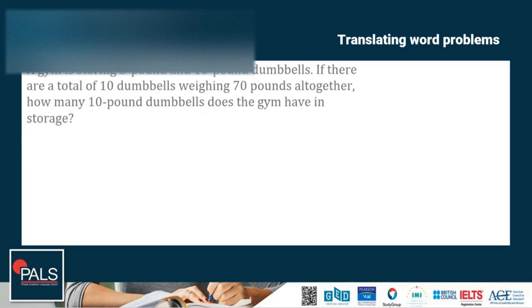Another example. A gym is storing 5-pound and 10-pound dumbbells. If there are a total of 10 dumbbells weighing 70 pounds altogether, how many 10-pound dumbbells does the gym have in storage? The unknowns are the number of 5-pound dumbbells and the number of 10-pound dumbbells. Let's call this X, 5-pound, and Y, 10-pound. There are a total of 10 dumbbells, so X plus Y is equal to 10.